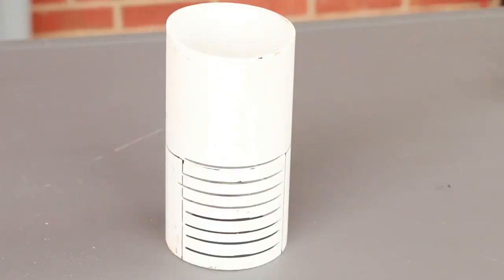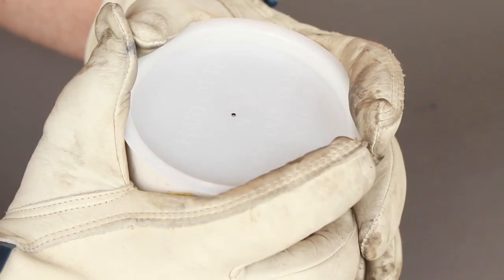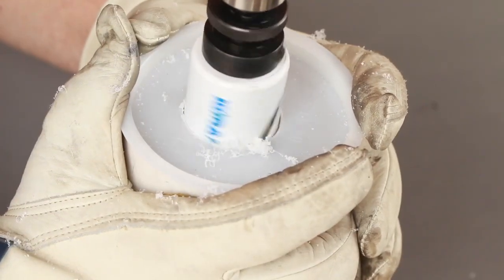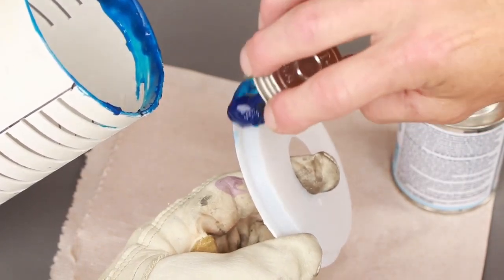After cutting all the slits, measure and cut the 4 inch pipe to its final length of 8 inches. Find the 4 inch end cap and drill a 1 and 3 eighths inch hole in the center of the cap. Glue the cap on the slitted end of the 8 inch outer sleeve pipe.